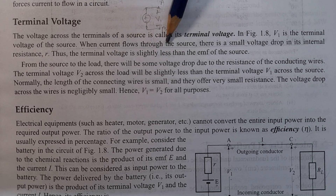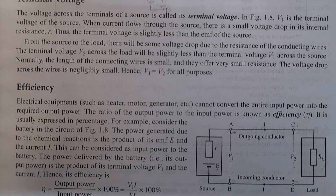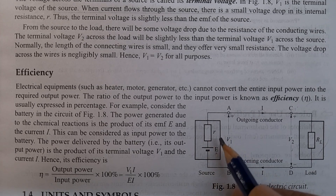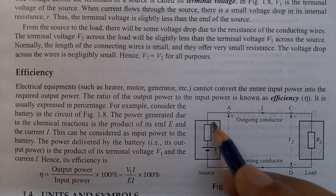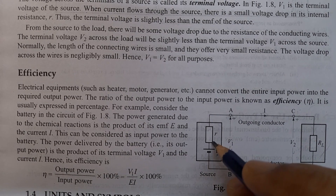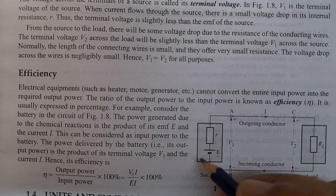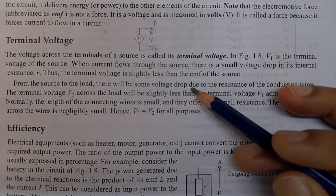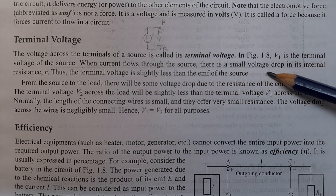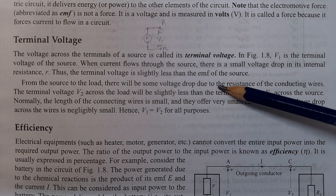When current flows through the source, there is a small voltage drop in its internal resistance R. Thus, the terminal voltage is slightly less than the EMF of the source.